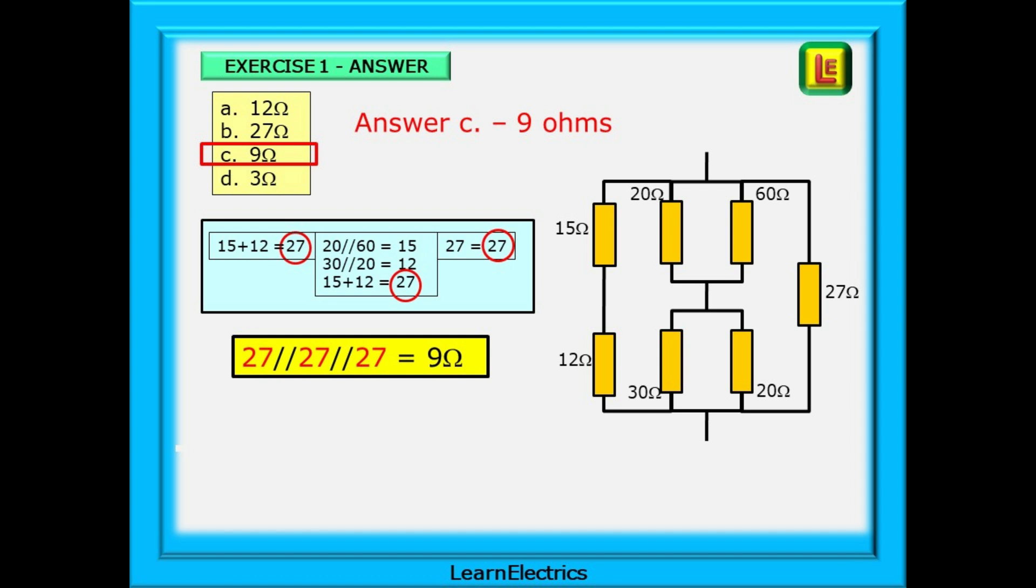Here is how it's calculated starting on the left. 15 plus 12 in series is 27 ohms. Then 20 in parallel with 60 is 15 ohms and 30 in parallel with 20 is 12 ohms. Add these together as they've become series resistors now and we have 15 plus 12 is 27 ohms. And then the 27 ohm resistor stays as it is. That leaves us with three 27 ohm resistances in parallel. Use the reciprocal formula and we have an answer of 9 ohms. The more that you practice the better you become.